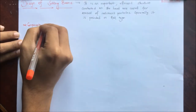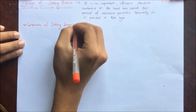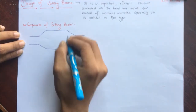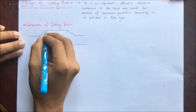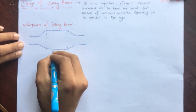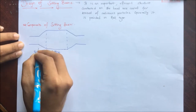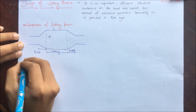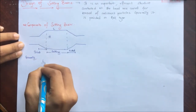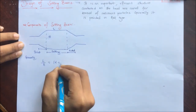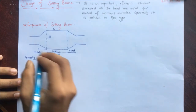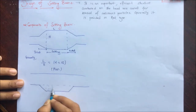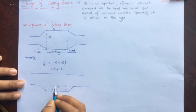Now let us discuss the components of the settling basin. In the plan view, we have the inlet, the settling part, and the outlet. L and B denote length and breadth respectively. Generally, the ratio of length to breadth is taken as 4 to 10, and on the basis of this the length and breadth are determined. In the sectional view, this portion is the settling portion where the sand or sediments settle down.